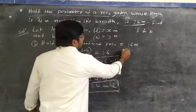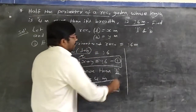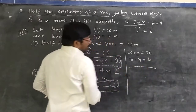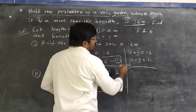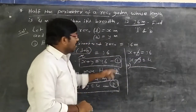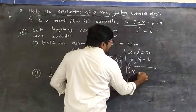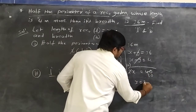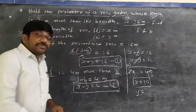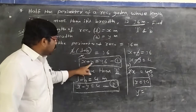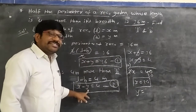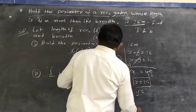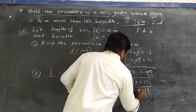Solving equations 1 and 2 using the elimination method: x + y = 36 and x − y = 4. Adding both equations, y and −y cancel. So 2x = 40, giving x = 20. Substituting x = 20 into equation 1: 20 + y = 36, so y = 16.